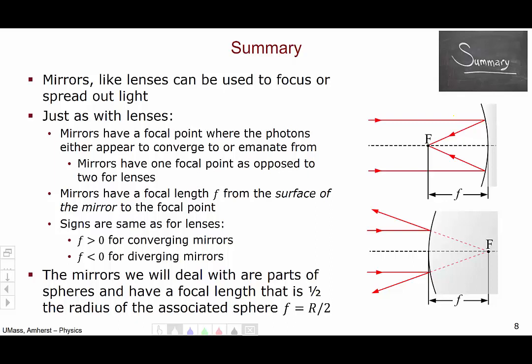But like lenses, mirrors have a focal length, and this focal length is measured from the surface of the mirror to the focal point. The signs for focal length are the same for lenses and mirrors. For converging, focal lengths are positive, and for diverging, focal lengths are negative.